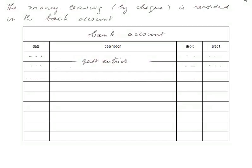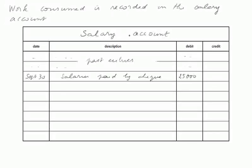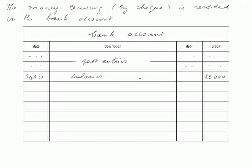At the same time, it's a double entry. There is money leaving by cheque and therefore it's recorded into the bank account. Same date, September the 30th — salaries paid by cheque — and we credit the bank account, which gives out the money: 25,000 euros. To be clear: the salary account records the work coming in and consumed, that's why it's in the debit. And the money leaves the bank account, therefore it's in credit.